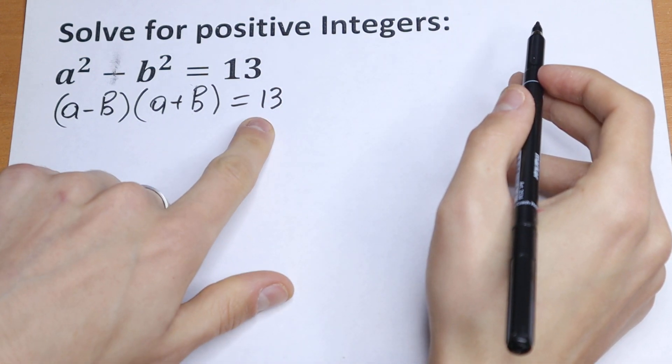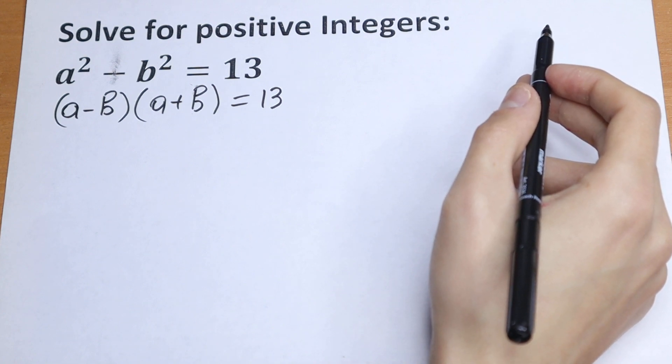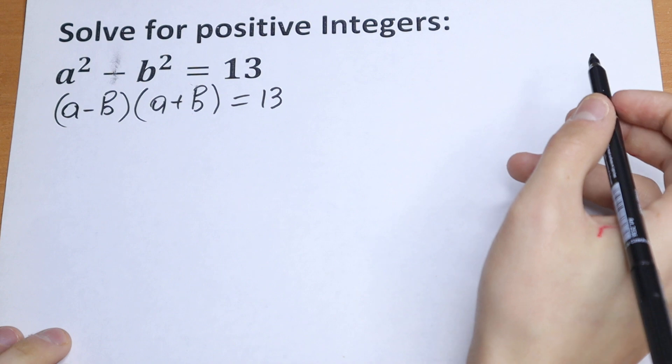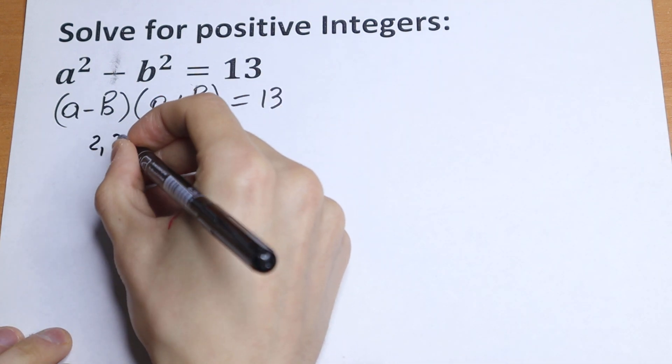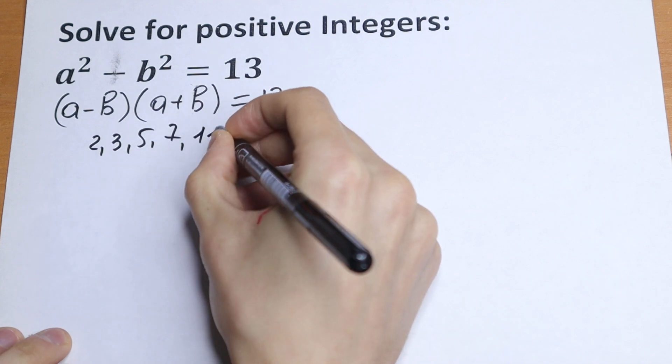First of all, this 13 is a prime number. What is a prime number? This is a whole number greater than 1 that cannot be exactly divided by any whole number other than itself and 1. So what prime numbers will it be? 2, 3, 5, 7, 11.